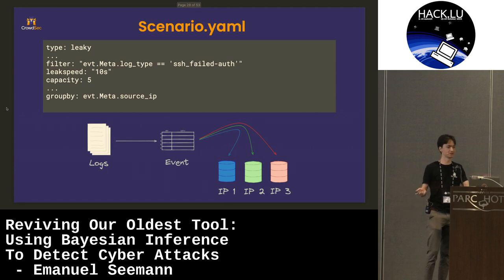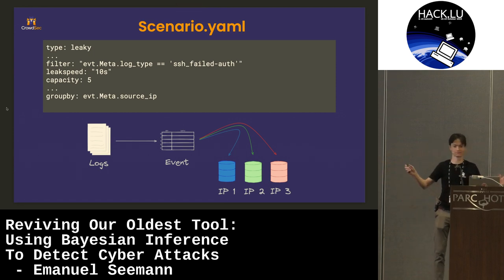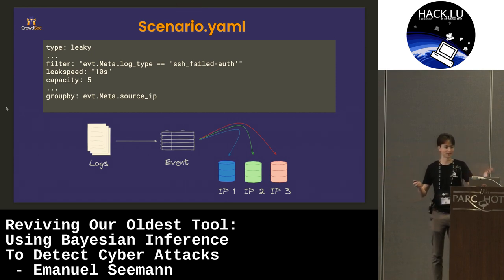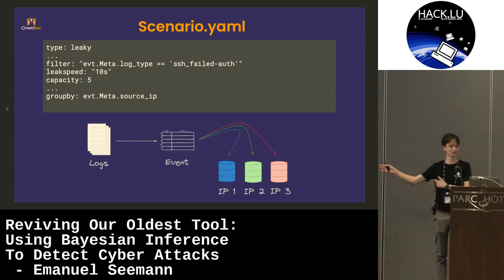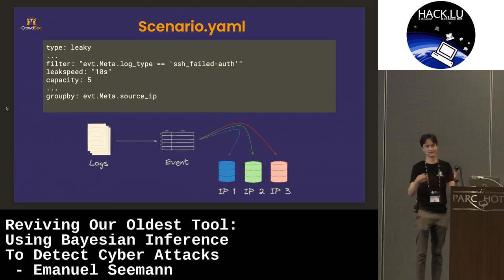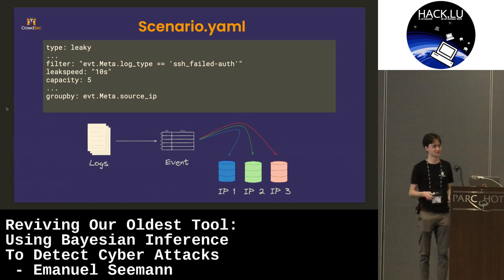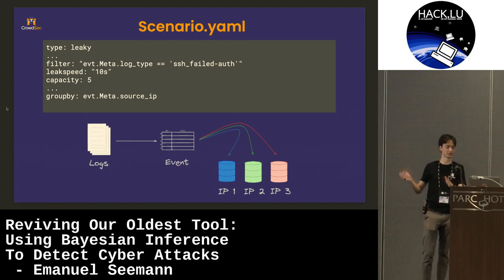These are configured in scenario YAML files. You can imagine what this one does — this is an SSH brute force. It looks at the logs for failed authorization, has a leak speed of 10, a capacity of five. These are all open source, you can find them in our hub. There are a lot of behaviors.